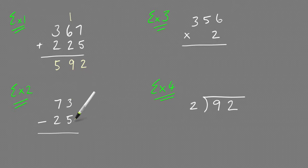The subtraction, 3 minus 5, you can't do it, so you have to borrow one from that 7. That becomes a 6. Put the 1 here, and now 13 minus 5 is 8, and then 6 minus 2 is 4. So 73 minus 25 is 48.